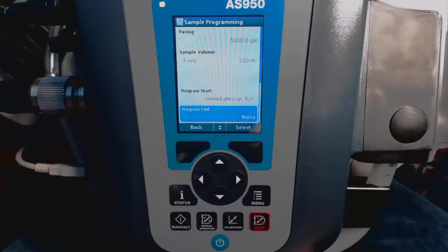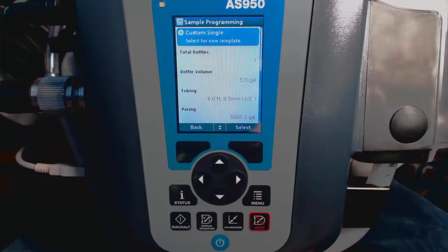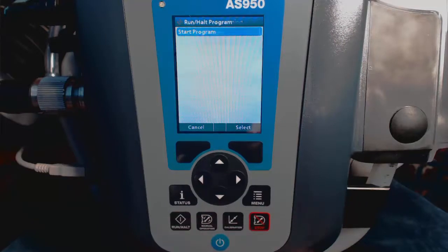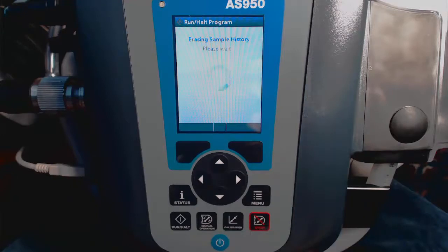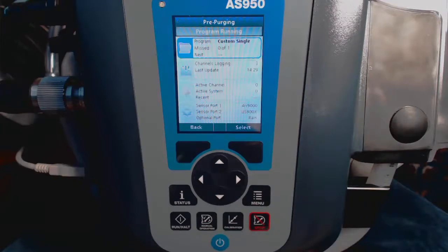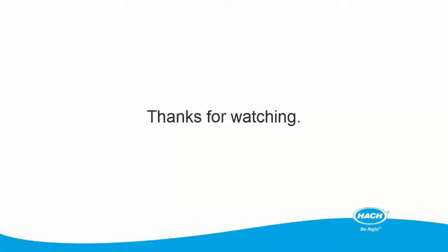So the assumption there would be that the bottles will be changed out in between. That's all the programming there is, and now we can just review all the items. And the last step would be to select the run key, and select run from the menu, and now the sampler will begin its program.